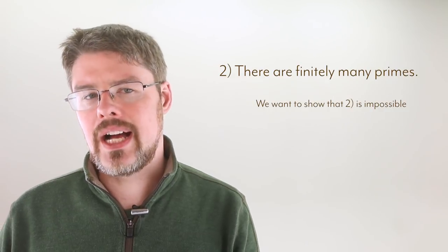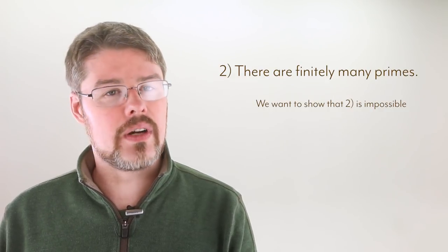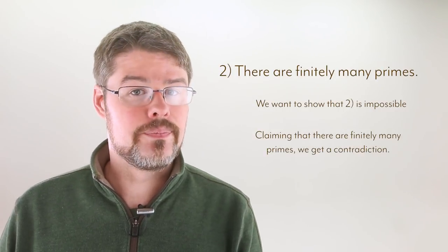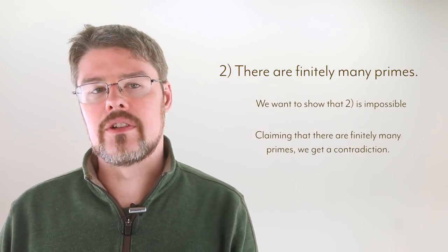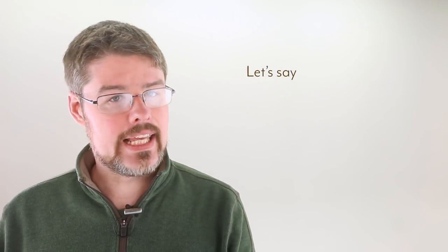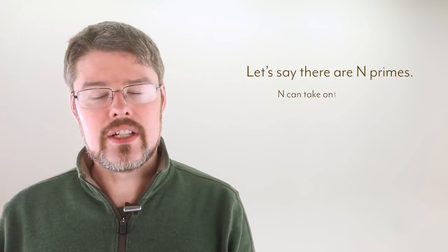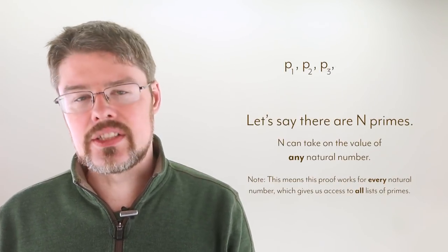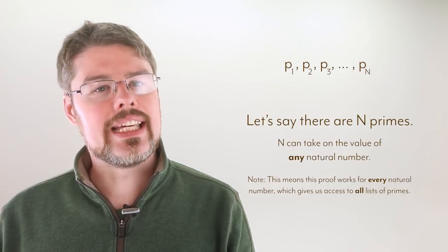So let's show that it's impossible for there to be a finite number of primes by saying, if there was, then we get a contradiction. If there was a finite number of primes, that means we could count them, right? Let's say there's n of them, where n can be any natural number. And with that, we can make a list of all the primes, which looks like this.